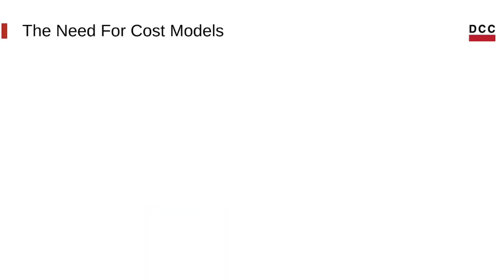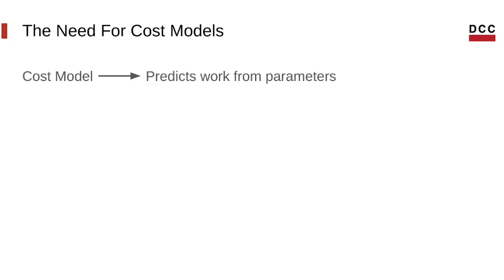We should start by defining what are cost models and why they are important. Basically, a cost model is an equation that describes the cost of a program based on its parameters, so we can have an idea of how well or how poorly it will perform based on its inputs. This can be useful for many reasons — for instance, we can guide optimizations and find inefficiencies. One real-world example of this is predicting the cost of different deep learning models.